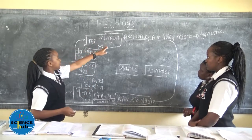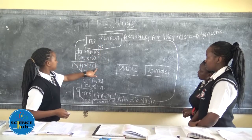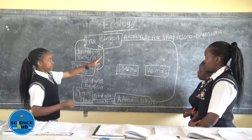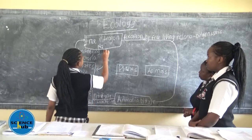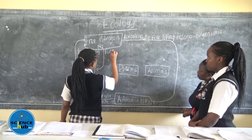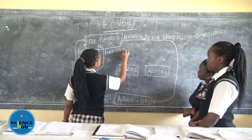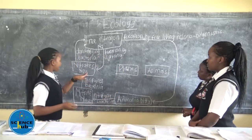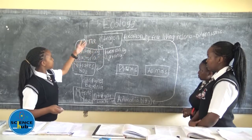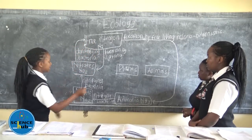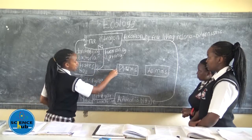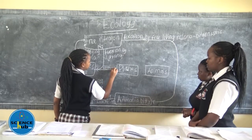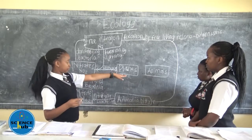We also have another fixation from free nitrogen whereby it can be converted directly to nitrates. This process is done by fixation by lightning. When free nitrogen has been converted into nitrates, plants can only accumulate it by absorption. And animals can get it through plants by feeding.